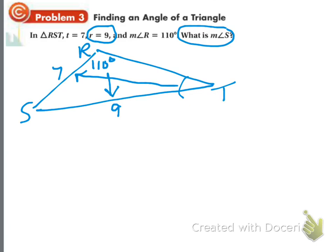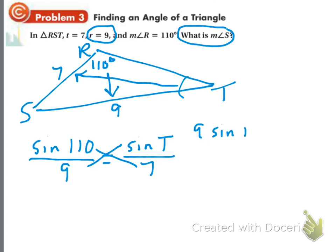So I have the sine of 110 over 9, because they're paired, equals the sine of T over 7 because I don't know the angle. Remember, the angle goes with the sine, the side length goes on the bottom. So again I have a proportion. You cross multiply: I have 9 sine T equals 7 sine 110. Now, this time T is with the sine, so you can't just divide by the word sine—that's ridiculous. What you do is you divide by 9, so the 9's cancel.